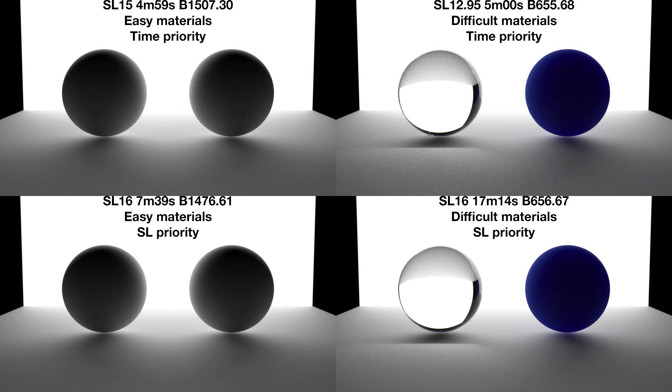To highlight this point, I've made these four images of the same scene: two spheres on a plane with an emitter behind providing lighting. On the left the materials are basic diffuse materials, very easy to render.